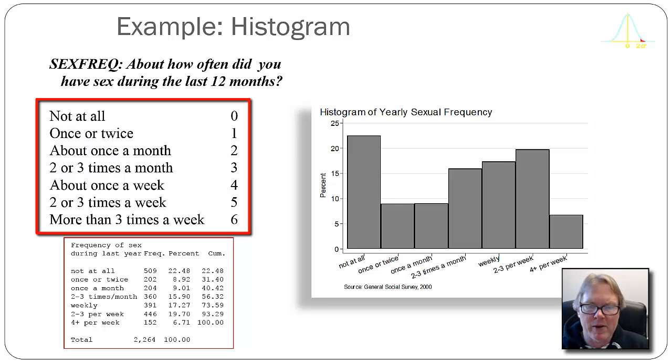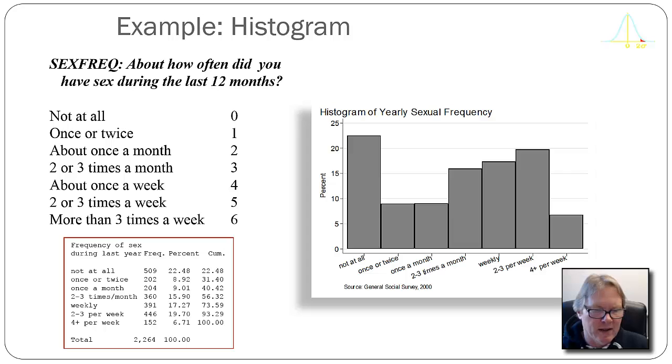I've shown you the frequency distribution for this down in the lower left, so you can see that in the year that I collected these data for, 22.48% of the sample responded not at all, all the way to 6.71% responding four plus times per week.